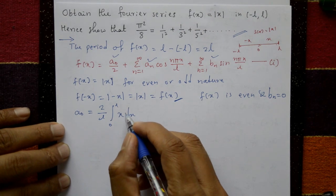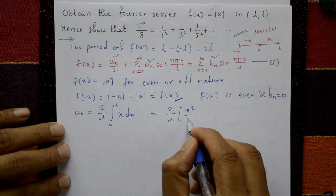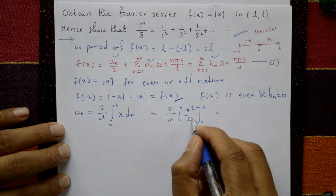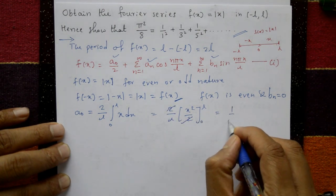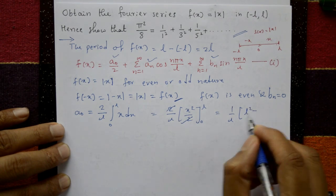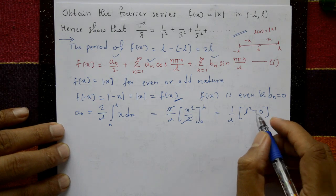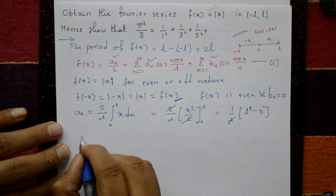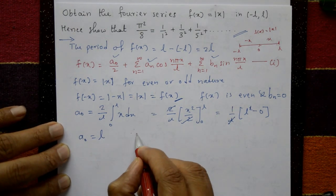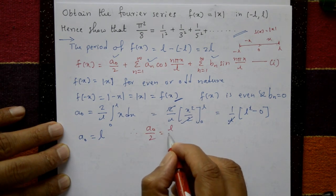So a₀ = (2/l) integral from 0 to l of x dx. Integrating x gives x²/2, with limits 0 to l. The 2 cancels: (1/l) times [x²/2] from 0 to l = (1/l)(l²/2 - 0). One l cancels, giving a₀ = l. Therefore a₀/2 = l/2.